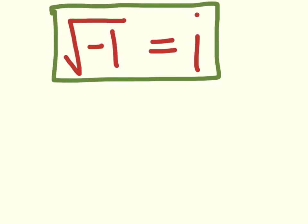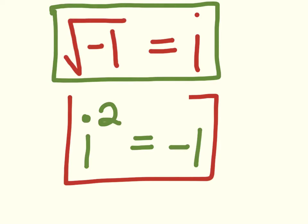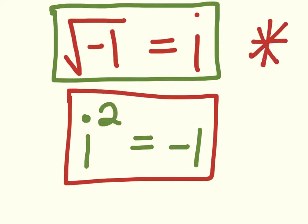And conversely, if I were to square i and square the square root of negative 1, I'd get negative 1. So i squared equals negative 1. These are the two things you really need to learn and know about complex and imaginary numbers.